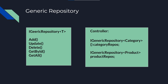To avoid this situation, we can use the generic repository pattern. In the generic repository pattern, we will create a single repository with type T and pass that T from the user class, meaning the type of repository will be defined at the user class. If we pass category to this repository, it will behave as a category repository, and if we pass product to it, it will behave like a product repository.